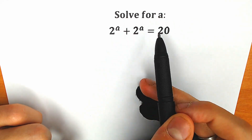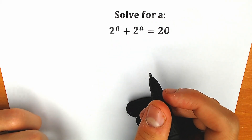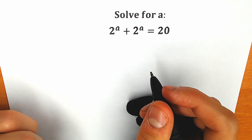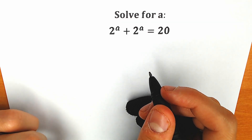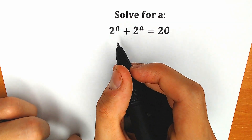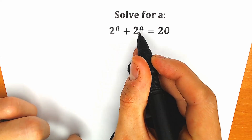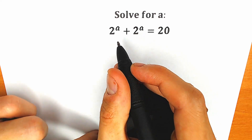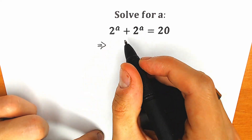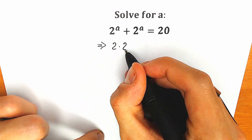We need to solve it for a, so if you have your solution, your answer, you can write it in the comments below and then we will check our answers. So first of all, this on the left side — 2 to the a plus 2 to the a — we can easily add it. So on the left side we can easily have 2 times 2 to the power a.